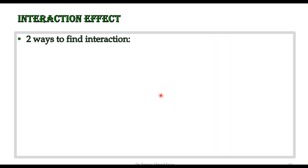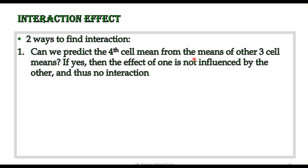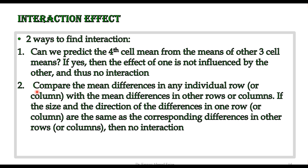We have two ways to find interaction. The first method: can we predict the fourth cell mean from the means of the other three cells? If we have four cells and hide one, can we predict its value from the remaining three? If we can predict it correctly, there is no interaction. But if the value is different from what we predicted, it means that cell is influenced by the other variable — and we have interaction.